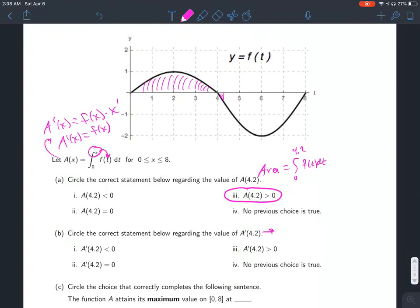In other words, this is looking at the y value on the graph. At 4.2, this y value is negative. So A prime of 4.2 is the y value of f, and that is negative in that case. So that is i.